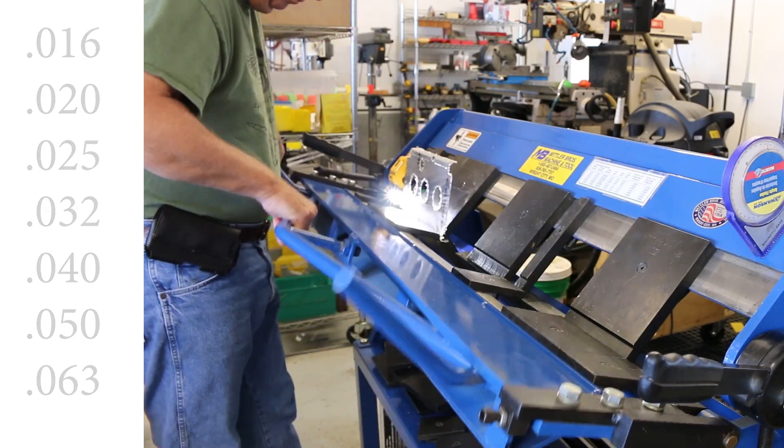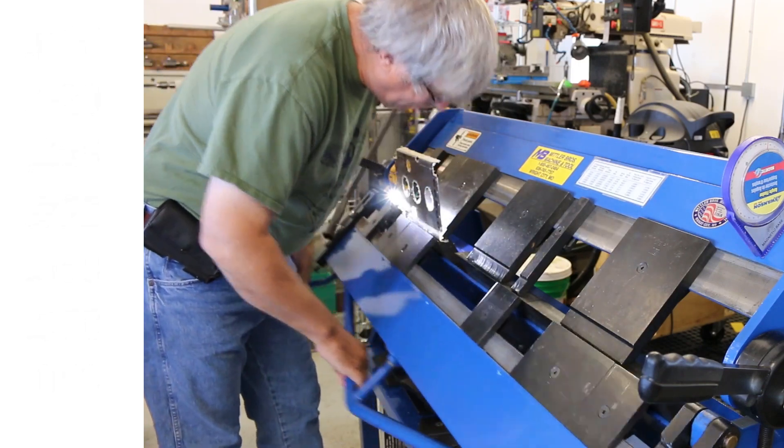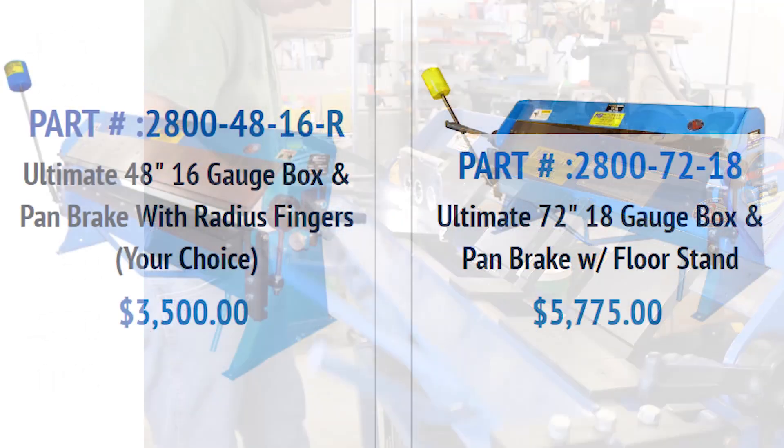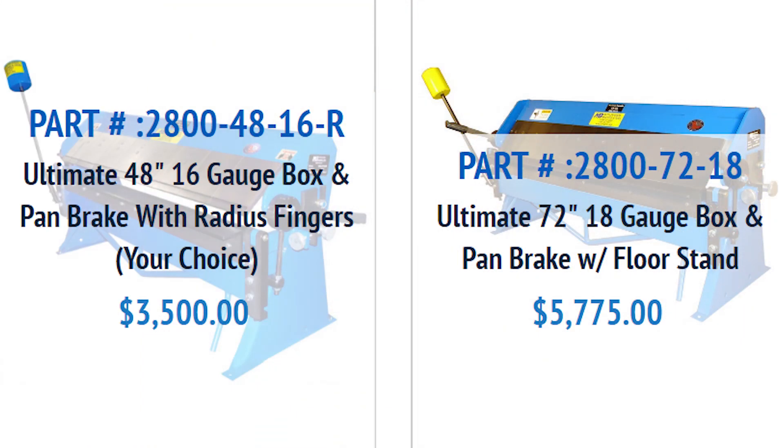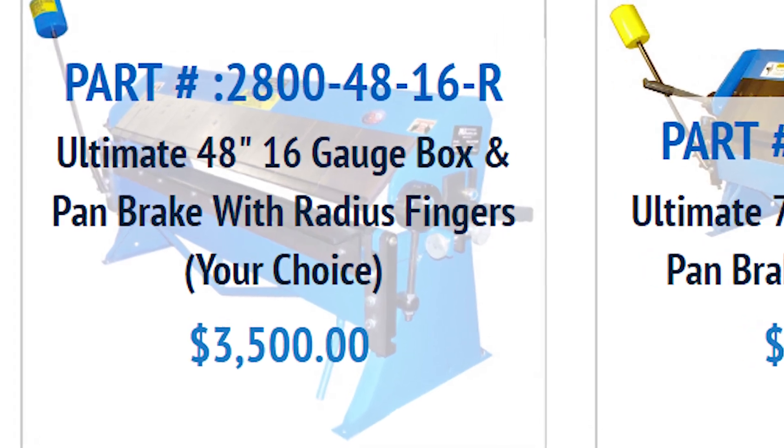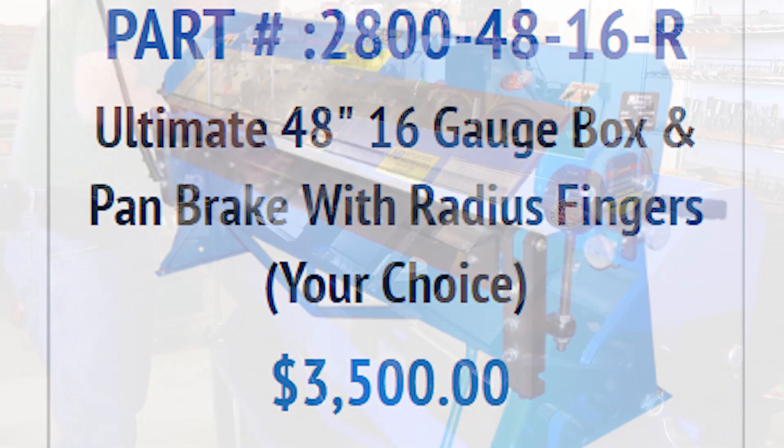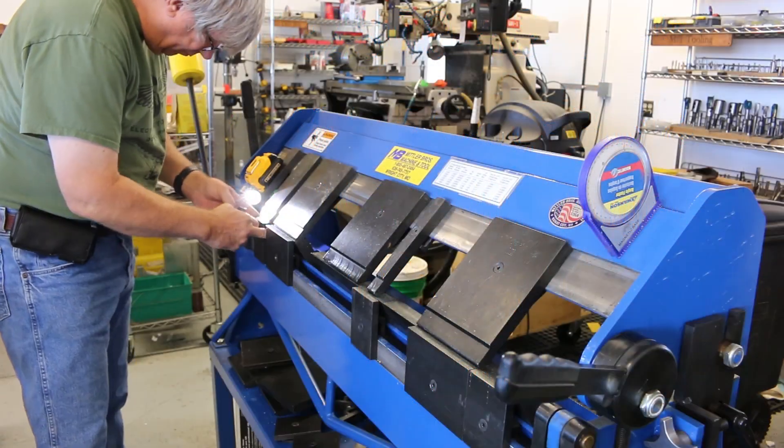If you're interested in purchasing a brake, selection of the gauge rating is only one of the criteria. You also must choose the width of the brake, which will determine how long a piece of sheet metal you can bend. And as you might imagine, both the gauge and the length significantly increase the cost.